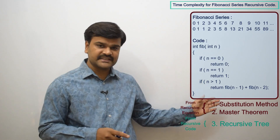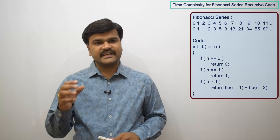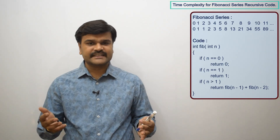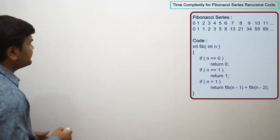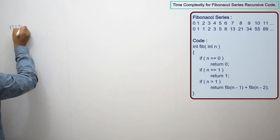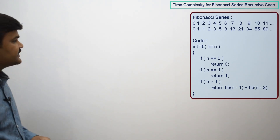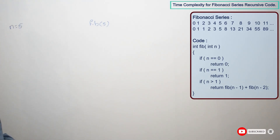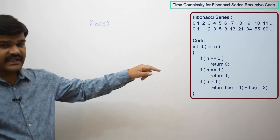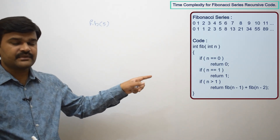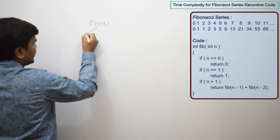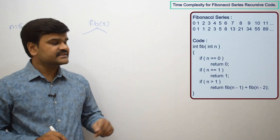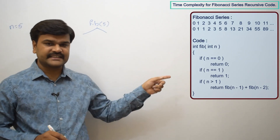What is the time complexity for this recursive code? For example, we are taking n = 5, meaning we are finding the 5th Fibonacci number. Let us construct the recursive tree. If you are seeing this for the first time, we already discussed in other videos how to construct a recursive tree, so that video will give more clarity. Here we directly construct the recursive tree.